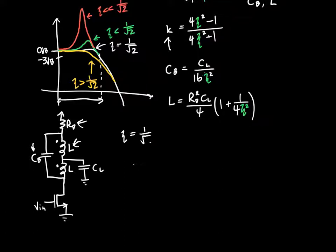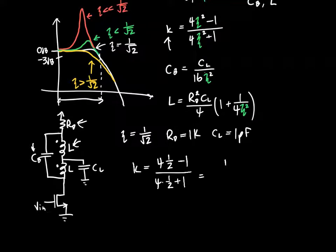So let's say zeta, we want to be equal to 1 over square root of 2. Well, what values of k, cb, and l do we get? Well, let's assume that rd is 1 kiloohm and cl is 1 picofarad. Then first we'll solve for k. So k is just 4 zeta squared, which is 1 half, because 1 over root 2 squared is 1 over 2, minus 1 over 4 times 1 half plus 1. So that's just 2 minus 1 over 2 plus 1, which is 1 third. So we know that our magnetic coupling constant between the two inductors has to be 1 third. And that's pretty reasonable even for a realistic circuit. So that's good. That means that we can actually implement this.